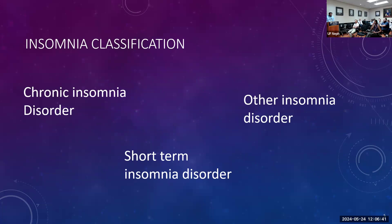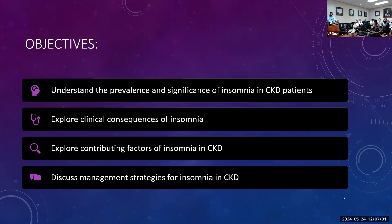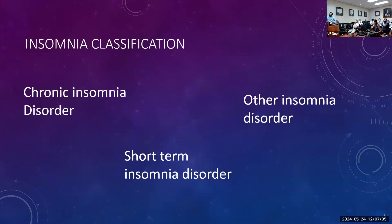Regarding insomnia classification, the International Classification of Sleep Disorders, ICSD-3, identifies three categories: short-term insomnia disorder, chronic insomnia disorder, and other insomnia disorder. Chronic insomnia disorder requires symptoms present at least three times a week over a duration of three or more months, and the diagnosis is not due to any other comorbid disorder.